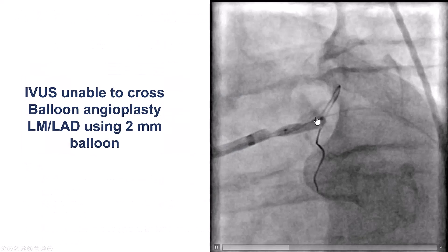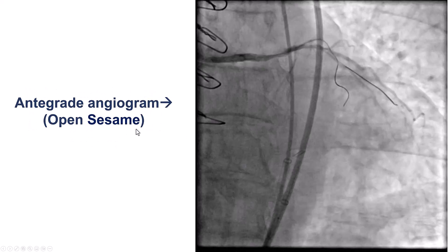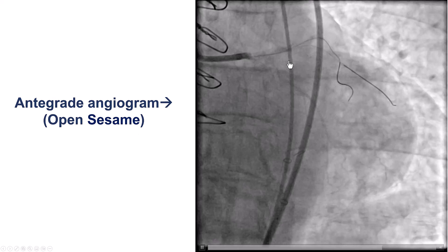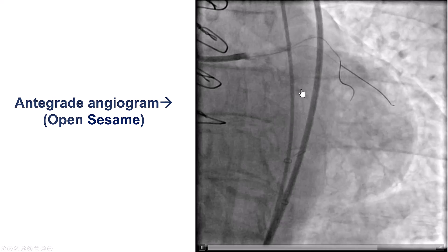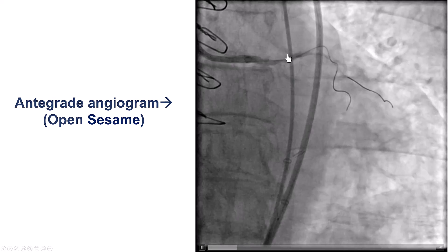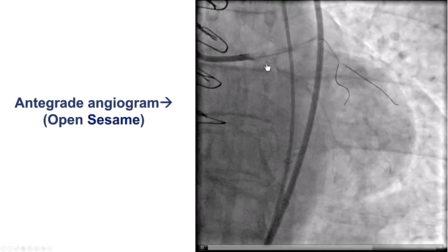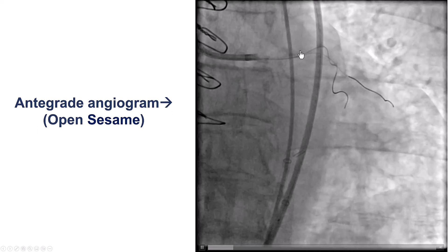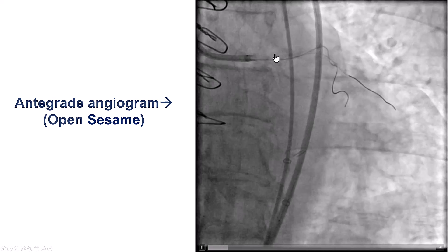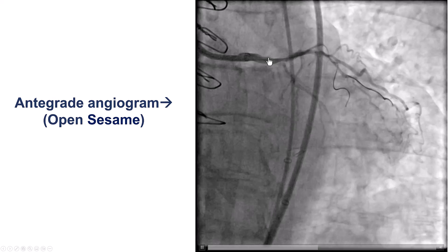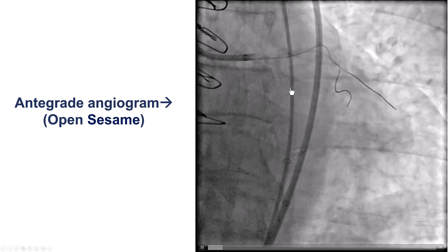IVUS was attempted but could not be delivered. So we wired into the Ramus and wired into the LAD, then performed balloon angioplasty with a two millimeter balloon. This is what OpenSesame is about — the ballooning actually restored some antegrade flow into the circumflex. The OpenSesame technique involves advancing a wire into the side branch next to the proximal cap, inflating there, which can sometimes restore flow into the occluded vessel and clarify the ambiguity, as was the case in this patient.